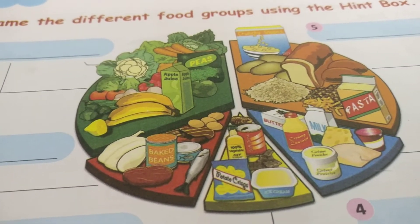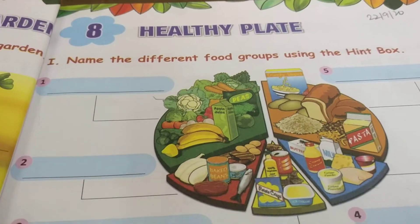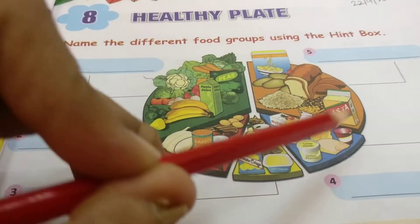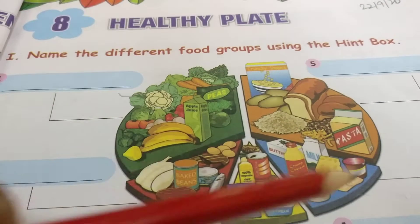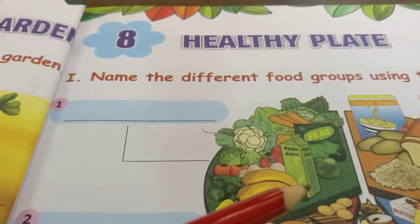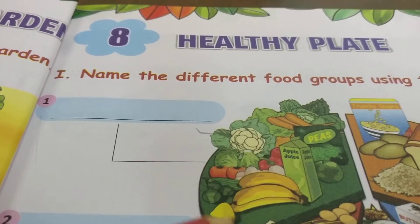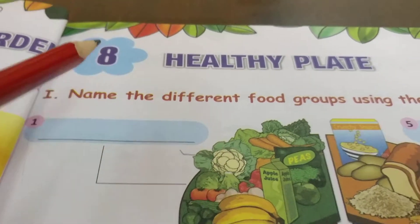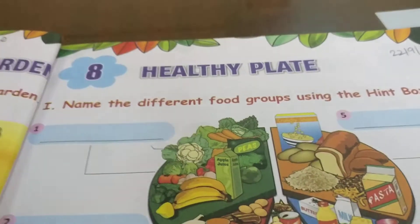Ab humari plate mein kya kya hona chahiye, let's check. Hum ko yaha pe label karna hai. Yeh plate mein kuch hisse bane hue hain - one, two, three, four, five. Hum ko yeh batana hai ki yeh kaunsa group of foods hai. Ab aap ko yeh dekhke samajh mein aa raha na - yeh sab kya hai? Yeh fruits bhi hai, vegetables bhi hai. Name the different food groups using the hint box.